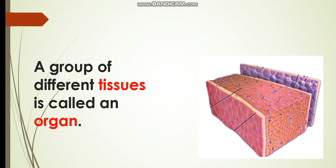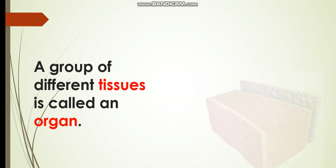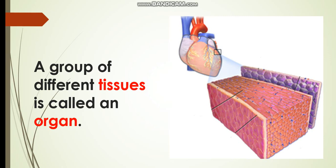A group of different tissues is called an organ. The heart is made up of different tissues.